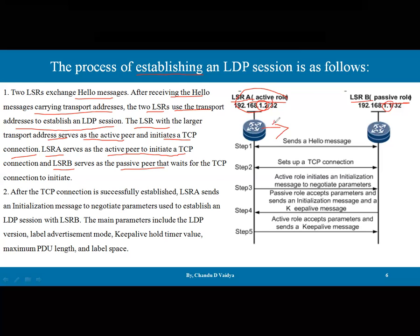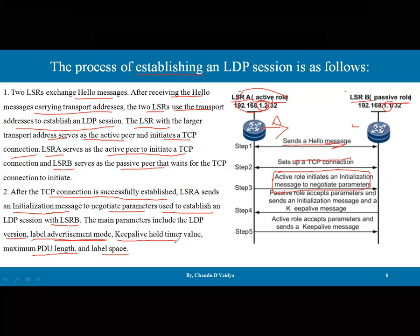LSR A is active and initiates the TCP connection; LSR B is passive and waits in listening mode. After the TCP connection is successfully established, LSR A sends an initialization message to negotiate parameters for the LDP session with LSR B. The main parameters include: LDP version, advertisement mode, keep-alive hold time timer values, maximum PDU length, and the label space.